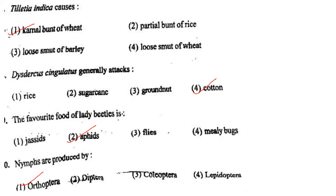Next one: Dysdercus singulatus generally attacks option 1, rice; option 2, sugarcane; option 3, groundnut; option 4, cotton. Answer is option 4: cotton.